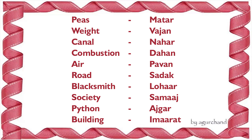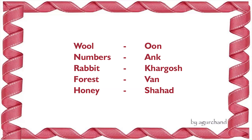Combustion: dahan, dahan. Air: pavan, pavan. Road: sadak, sadak. Blacksmith: lohar, lohar. Society: samaj, samaj. Python: ajgar, ajgar. Building: imarat, imarat. Wool: oon, oon. Numbers.